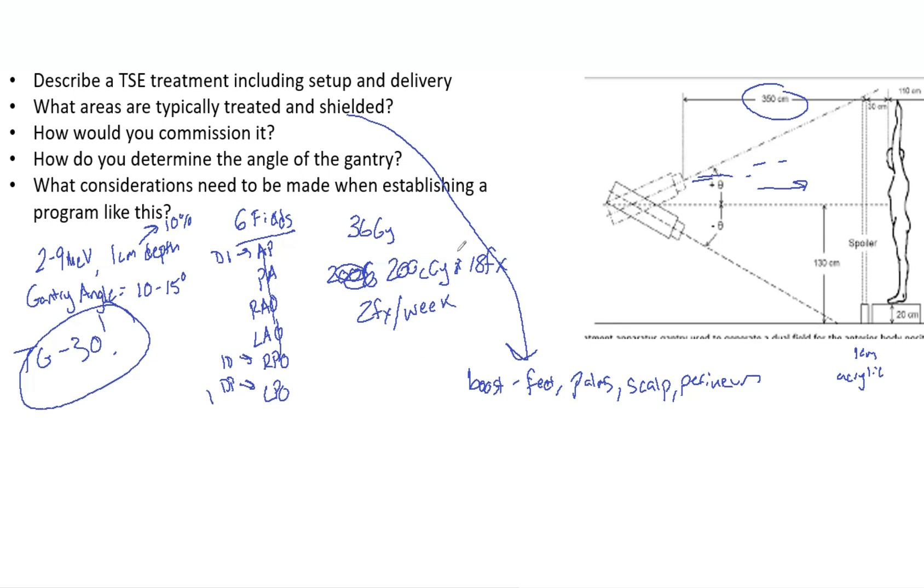commissioning: how would you determine the angle of the gantry? Say you don't have a TSE program but they want you to have one. First, you need TLDs for in vivo dosimetry, you need RANDO phantoms to test, and you need your exact treatment parameters—how much room is there between the gantry and the patient. Something you would do, which TG-30 highlights, is you could put a board